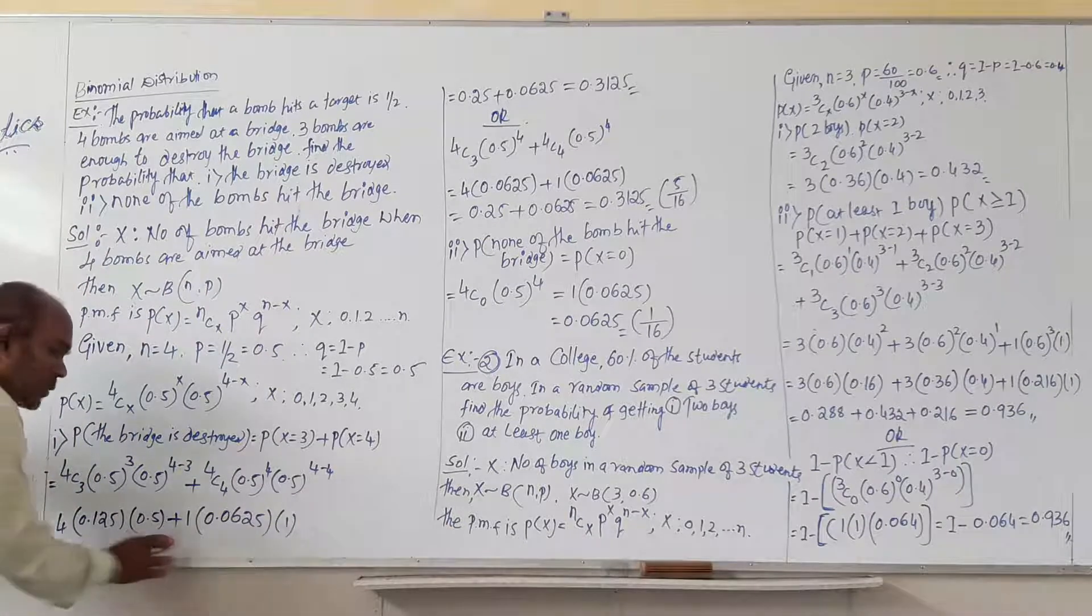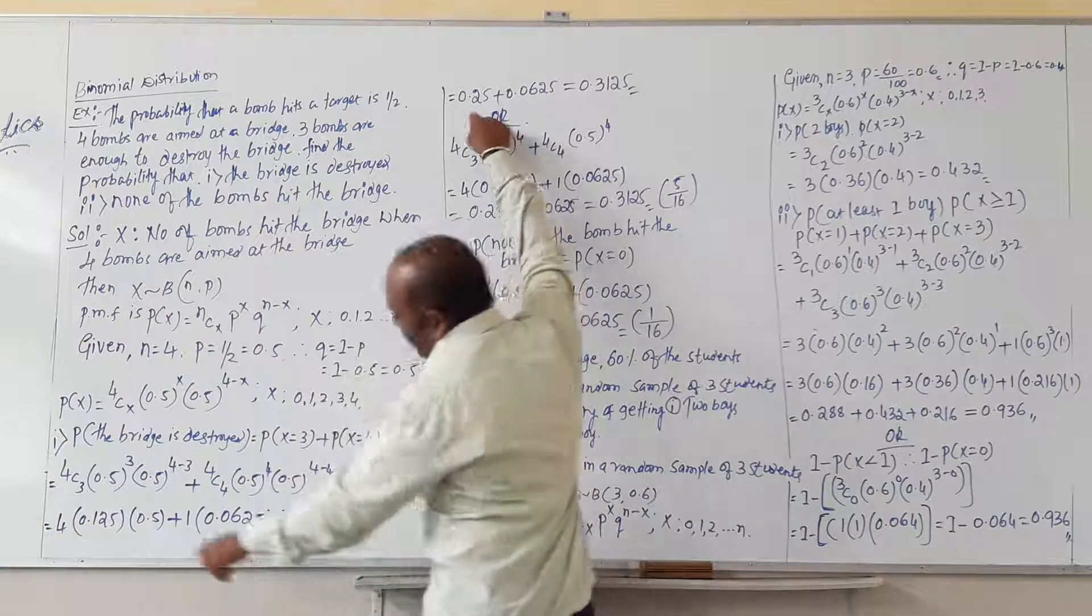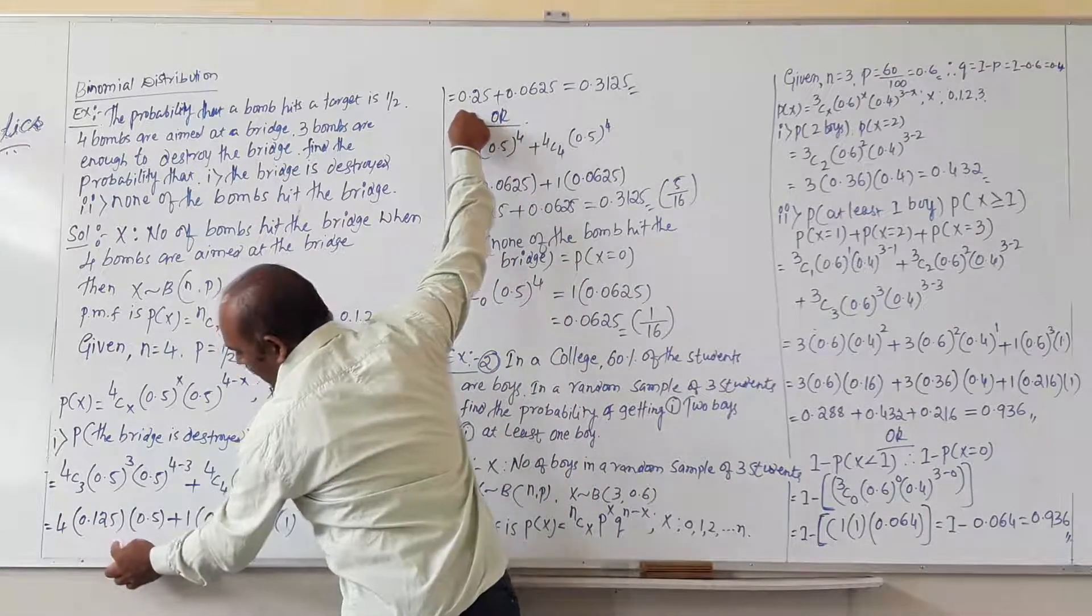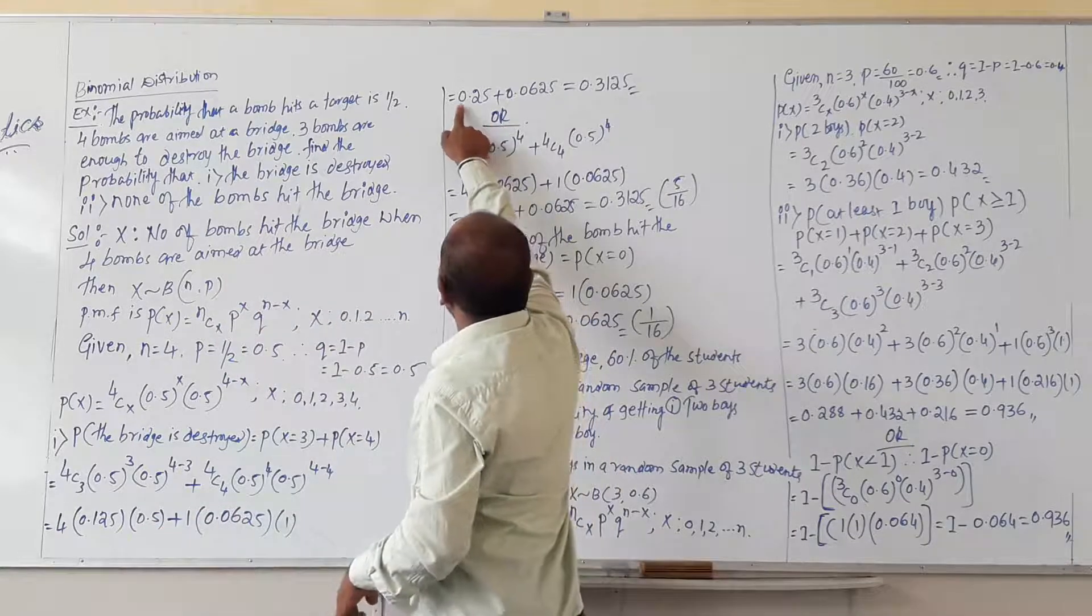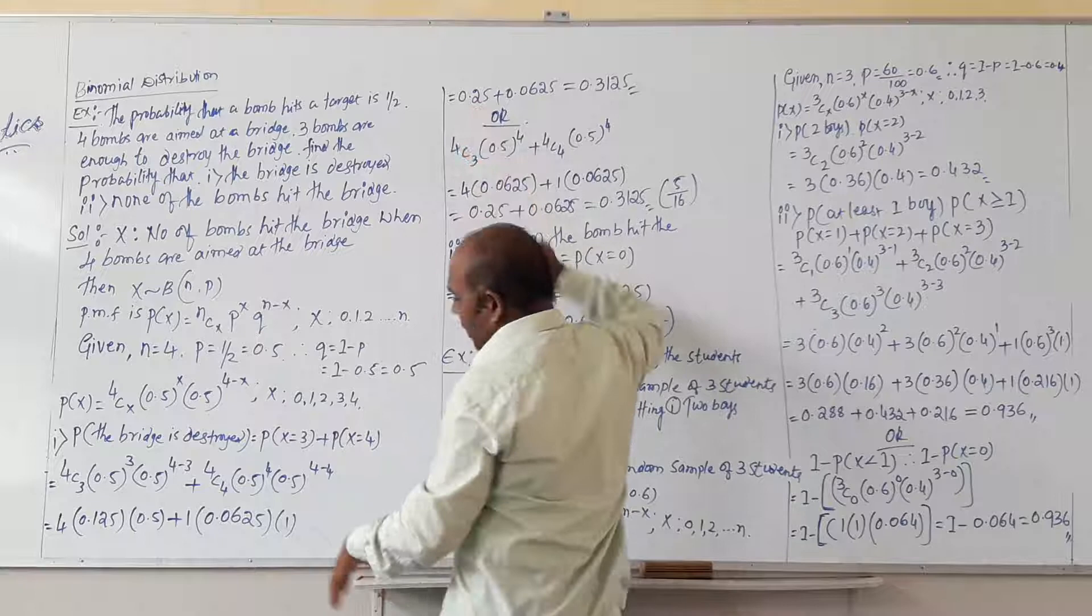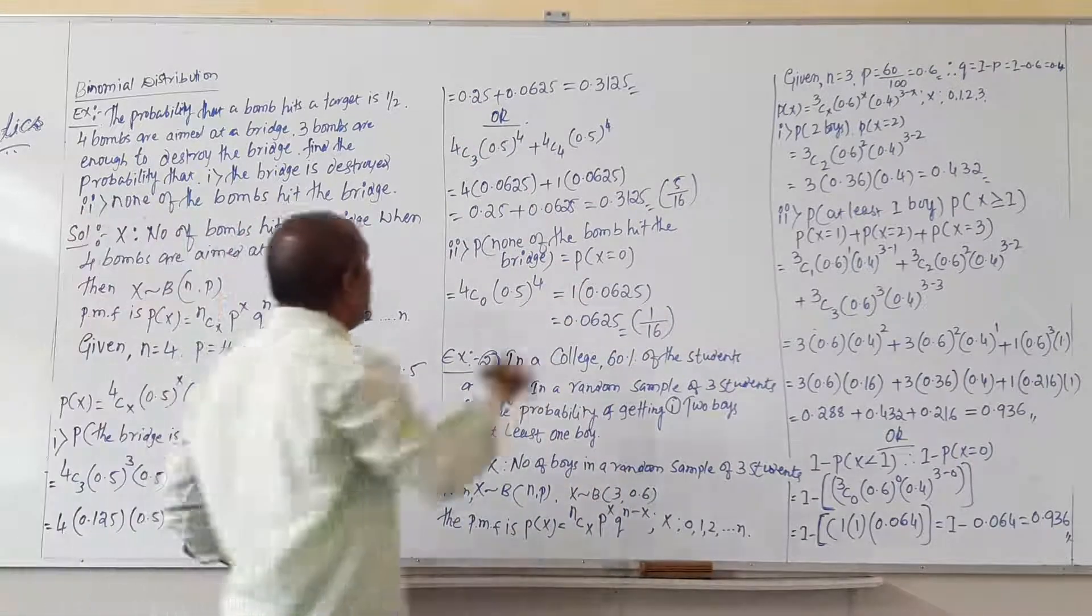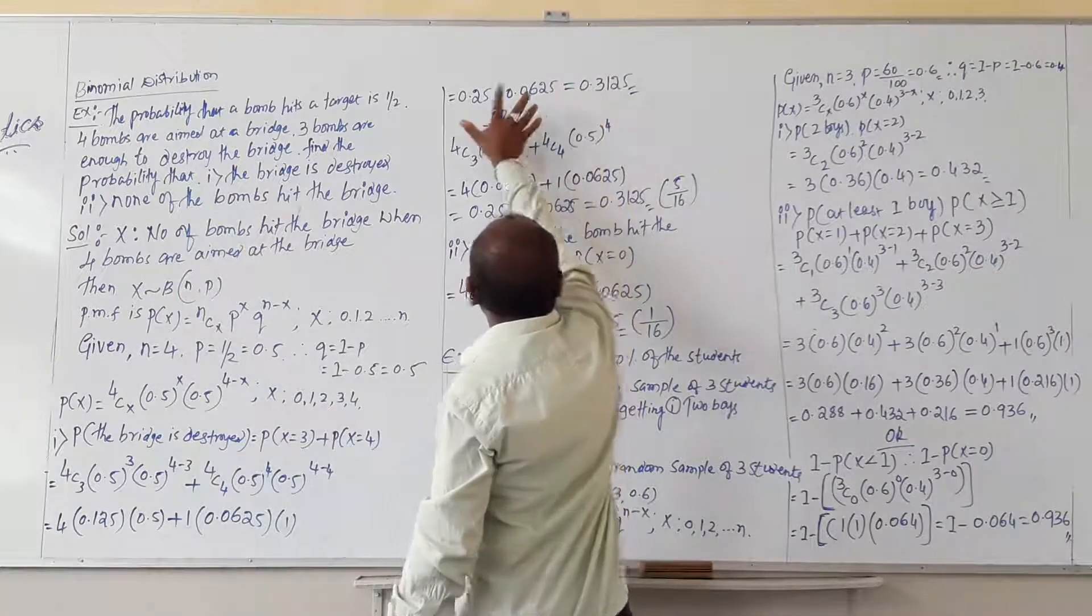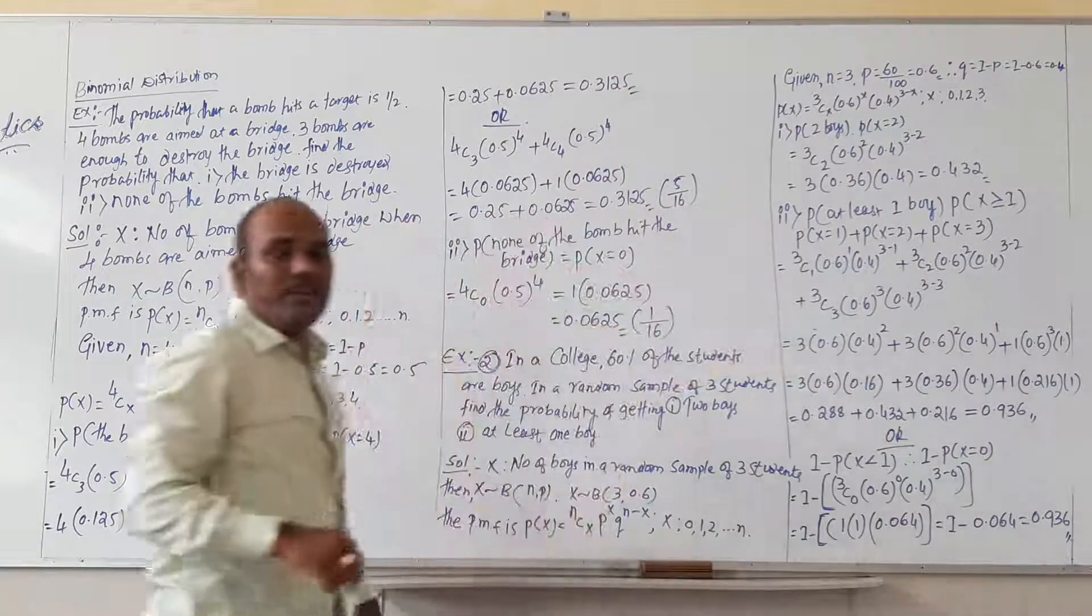So add these two answers. Here, 4 into 0.125 into 0.5, you will get result is 0.25. Then 1 into 0.0625 into 1, then you will get the result 0.0625. By adding these two answers you will get 0.3125.